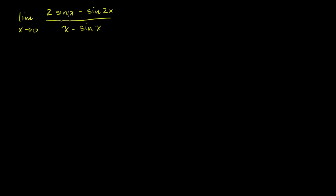If we plug in x equals 0, we get 2 sine of 0, which is 0, minus sine of 2 times 0, which is again sine of 0, so that's 0. Our numerator equals 0. Our denominator is 0 minus sine of 0, which is also 0. So we have that indeterminate 0 over 0 form we talked about in the last video.